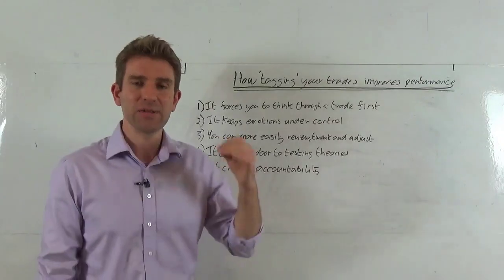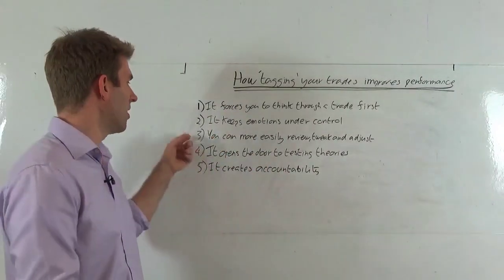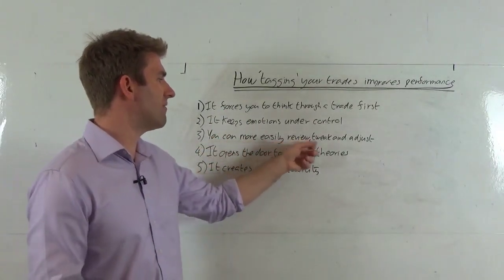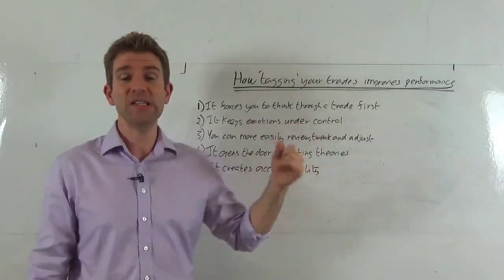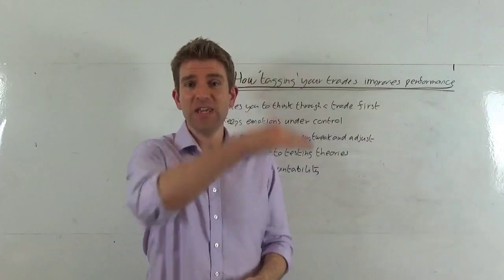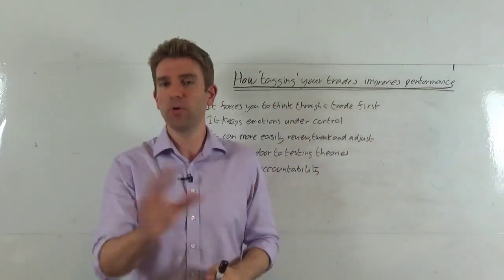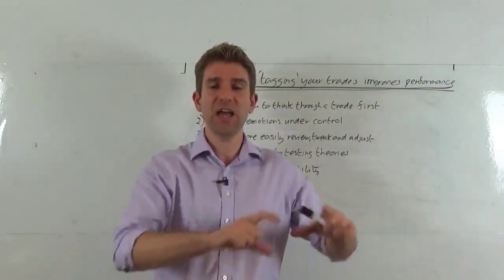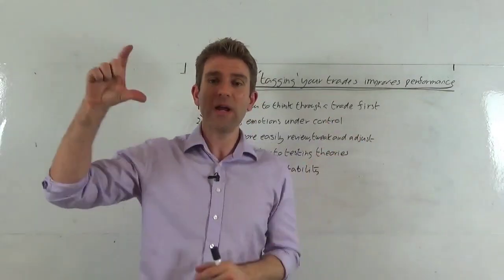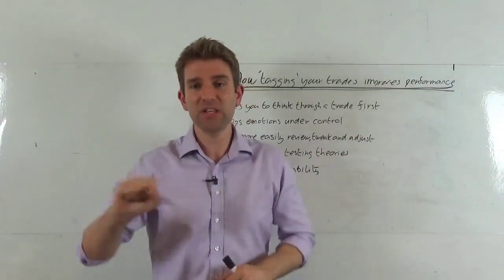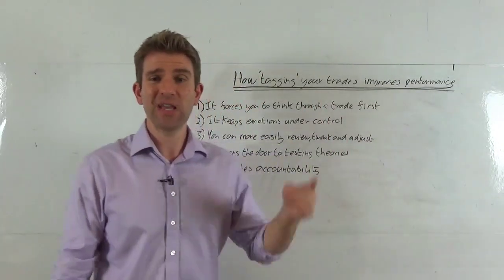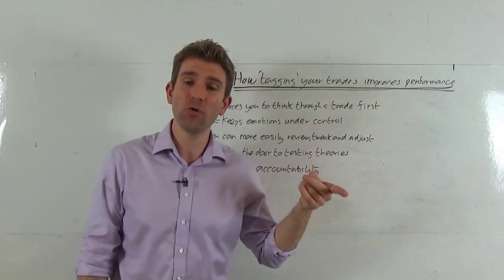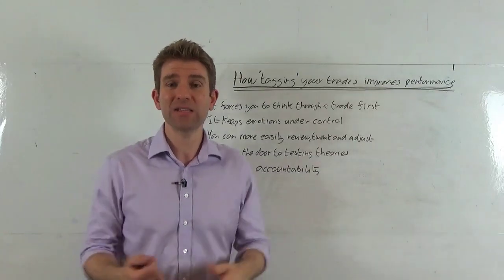Number three: you can more easily review, tweak, and adjust. The biggest logical operational reason for doing this is that if you tag them manually, you can put them in Excel whenever. You can filter. You can say, hey, every single trade with a number two tag gave me this much P&L. Everyone with a three tag gave me this much P&L.